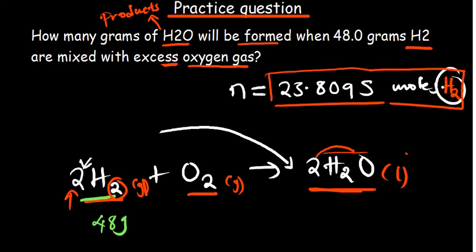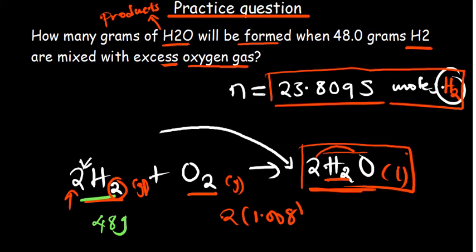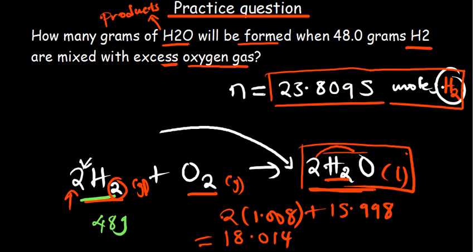Now we find the molar mass of water. Water has two hydrogen atoms and one oxygen atom: molar mass of H₂O = (2 × 1.008) + 15.998 = 18.014 g/mol. This is the relative molecular mass of the water molecule.